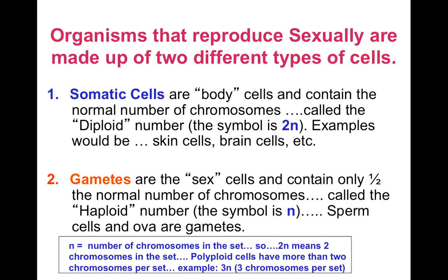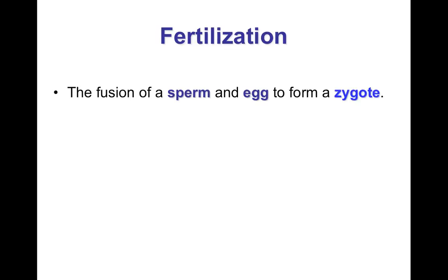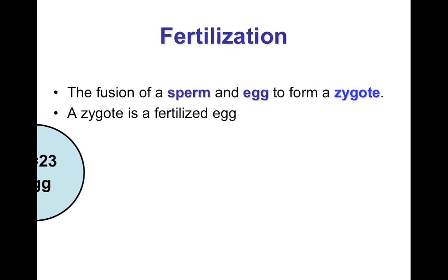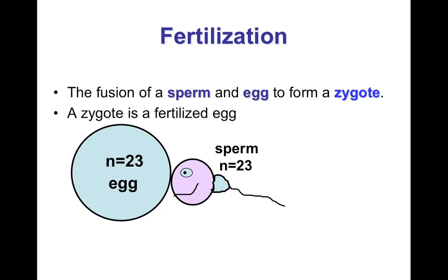In meiosis, we're going to make sex cells, or what we call gametes. These cells are haploid, so they only have half of the genetic material. When we are making gametes, we want to have half the chromosomes, so that when we bring sperm and egg together and make that first zygote, it will then have 46 chromosomes.